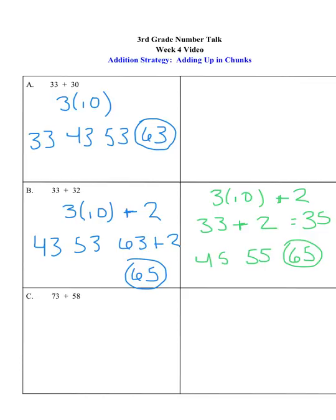So if I took my 58 and I thought of it as 50 plus 8, or 5 tens plus 8, start at 73, I would say 83, 93, 103, 113, 123. So I would have 123, and I would still have to add my 8 to that, which would give me my 131.